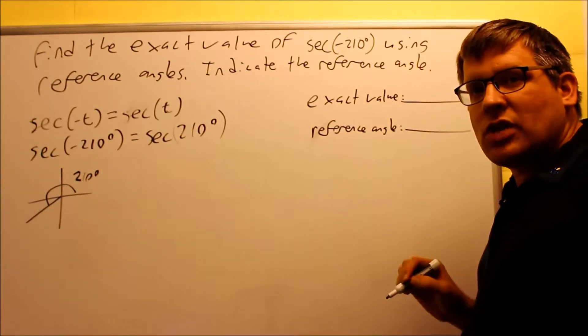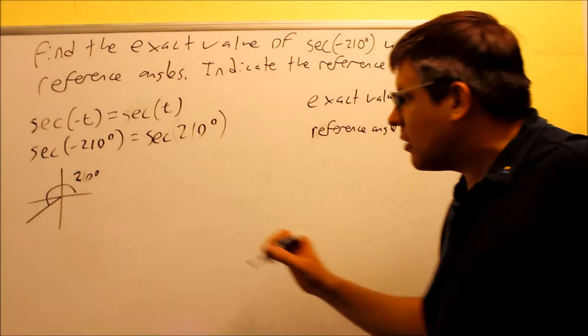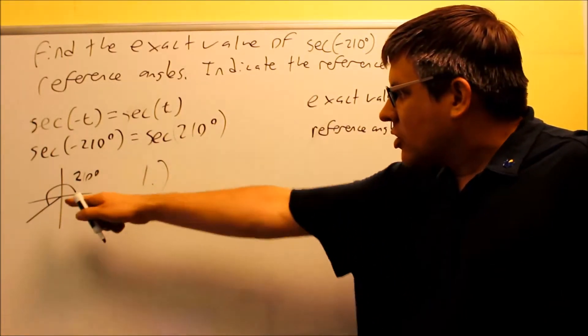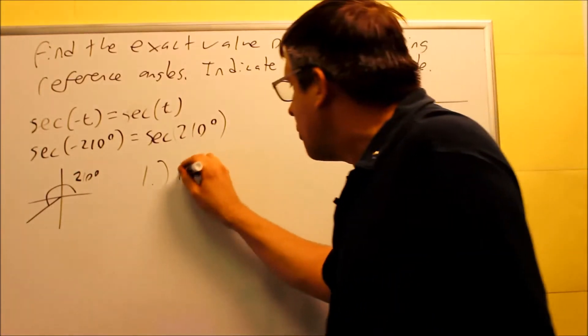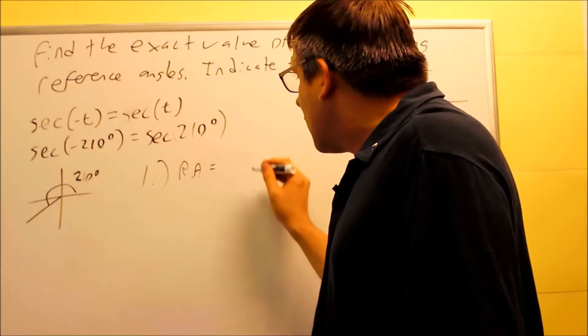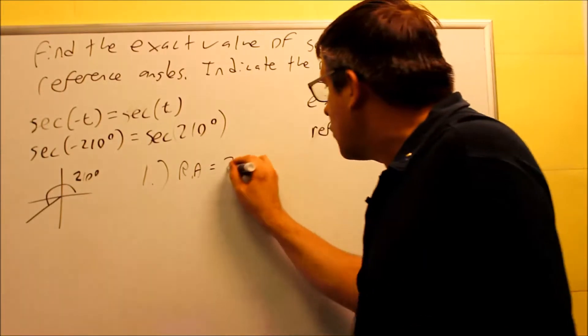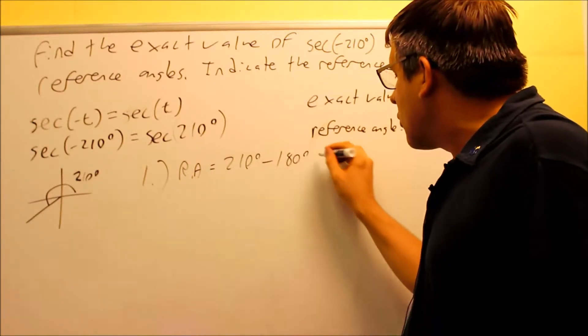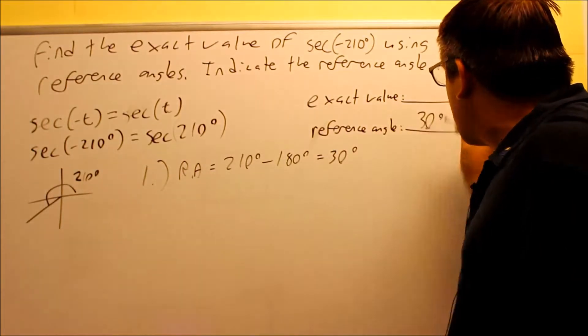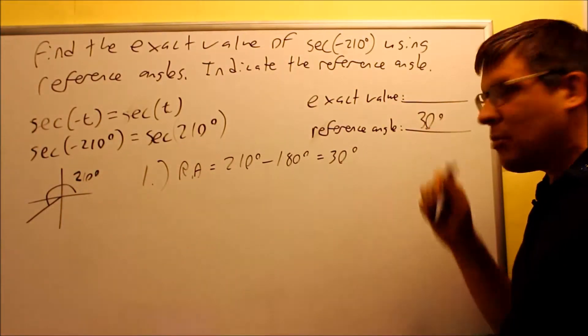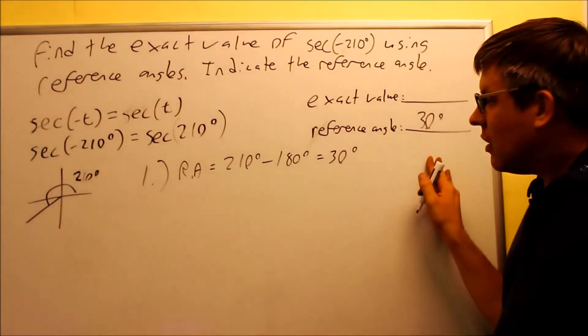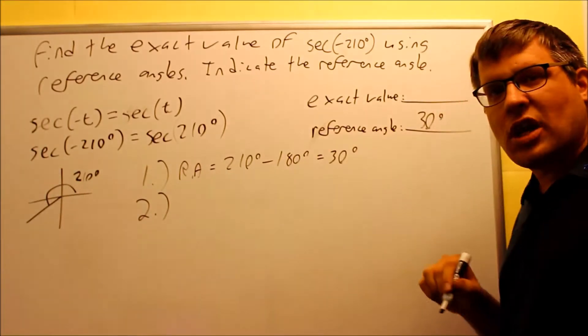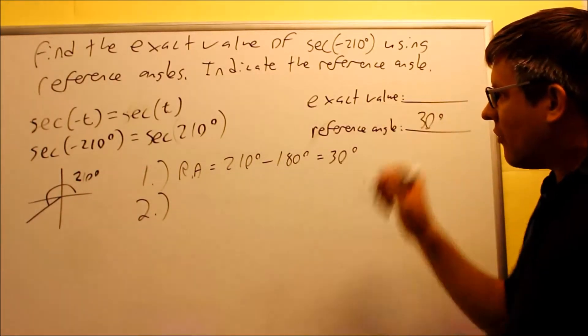So, in order to find the exact value, that's a three-step process that we previously talked about. The first step would be to find the reference angle. So in this case, I'm in the third quadrant. My reference angle formula is going to be theta minus 180. So I have 210 degrees minus 180. If I subtract that, I get 30 degrees. So right there, I can put 30 degrees on my first blank here. That answers the first part of the question. I'm in step one of step three, so I have two more steps I need to do to find the exact value.